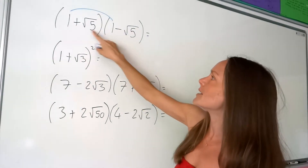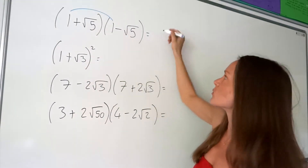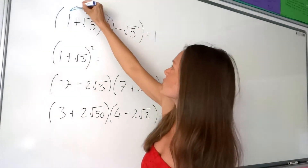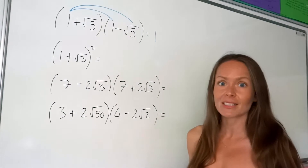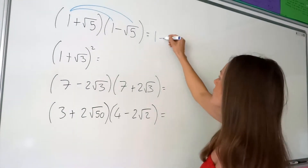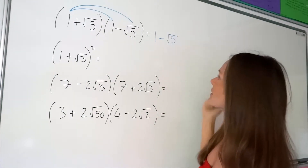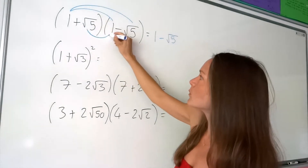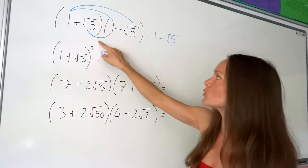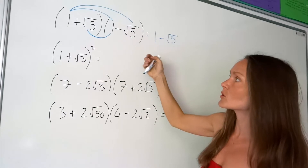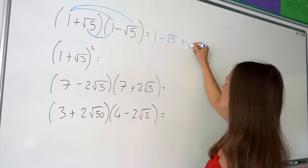So if we take the first two here, 1 multiplied by 1 is just 1. Then these two: 1 multiplied by negative root 5 is just negative root 5. Don't forget the signs. These two here, we've got positive root 5 multiplied by 1, which is just positive root 5, so we have to put a plus there.